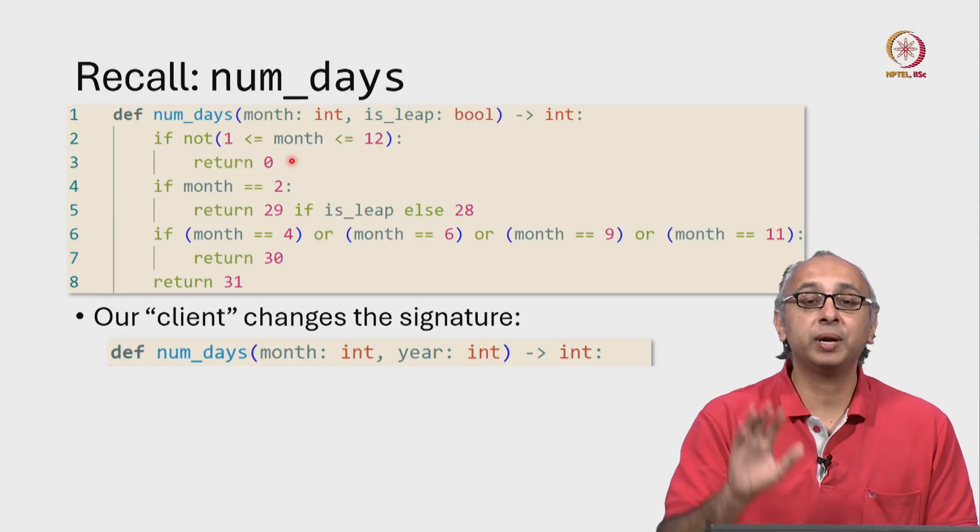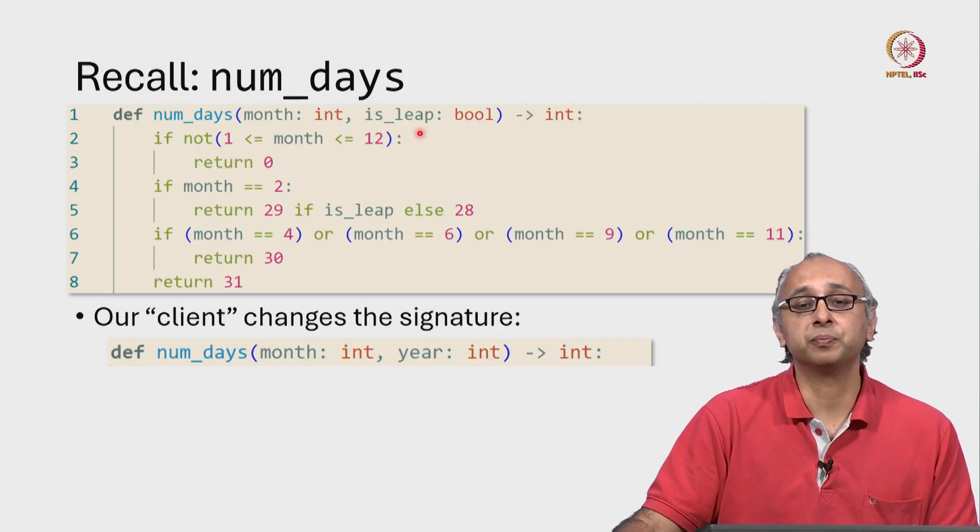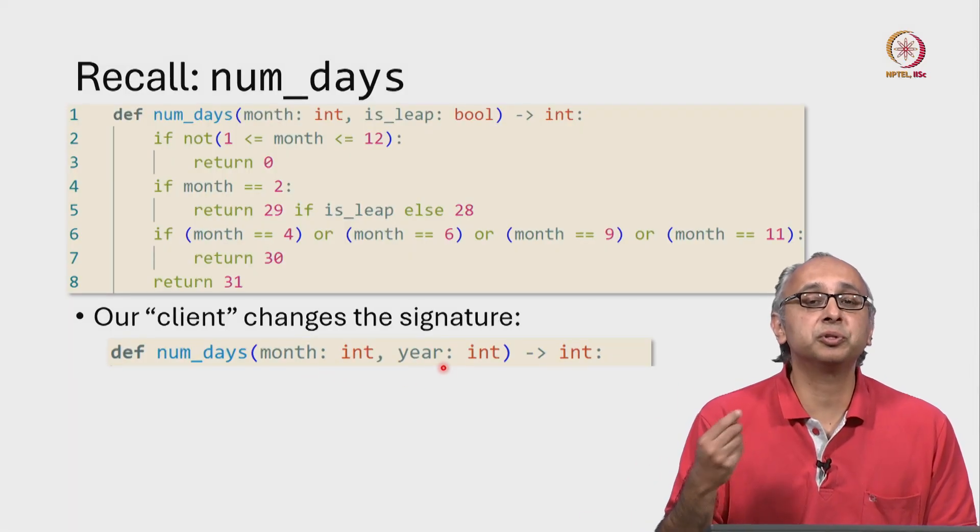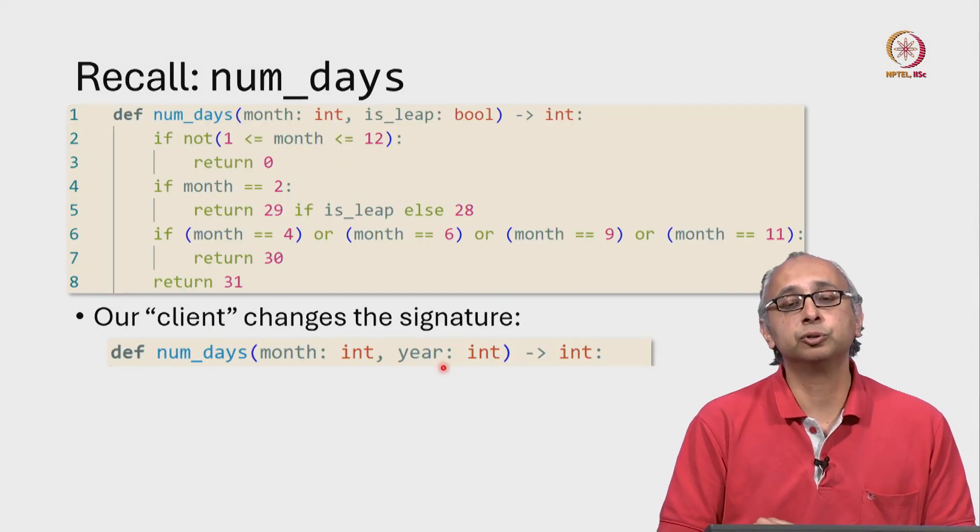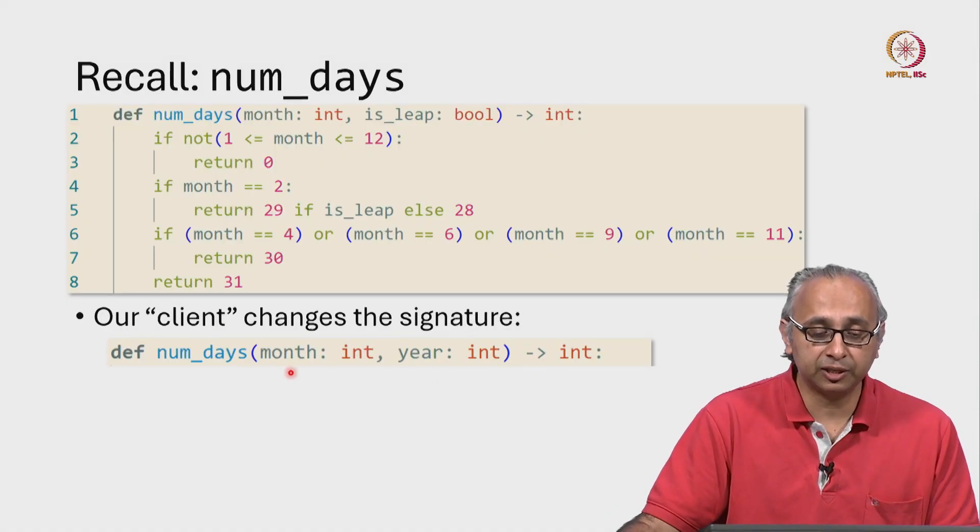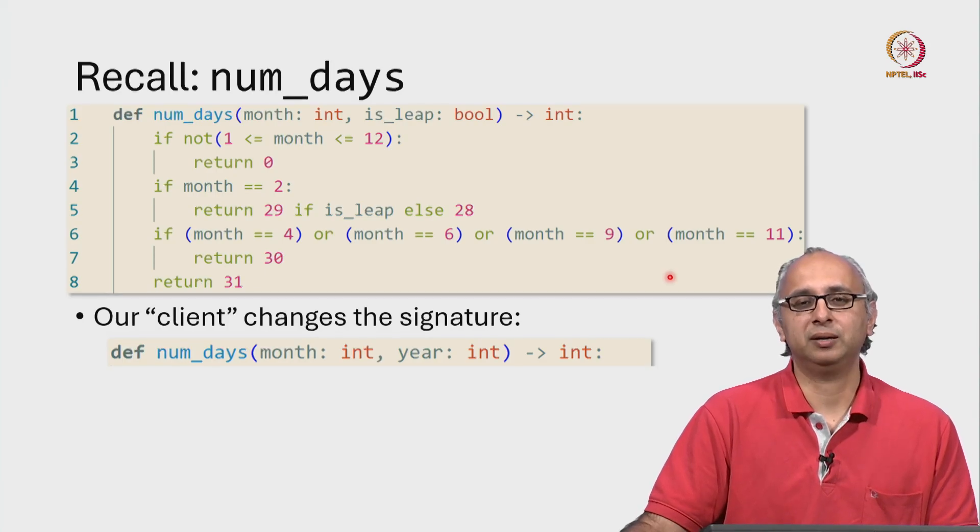Our client in this case says, wait, wait, wait. I'm not going to give you these two pieces of information. I will give you the month, but I will just give you the year. The client is not going to tell us if it's a leap year or not. They want us to figure out. So the client has changed the signature of the function. Does that mean we have to throw away all our hard work?